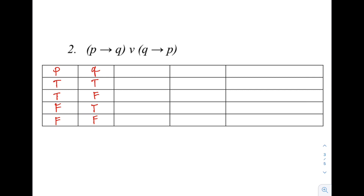Checking the given expression, as you notice we have two operators: a disjunction, and two conditional statements. We first evaluate what is inside the parentheses. The first is 'if P, then Q'. Again, in 'if P then Q', it will only be false when the combination is true, then false. So: true, true — this is true; true, false — this is false; false, true — we have true; false, false — we have true.